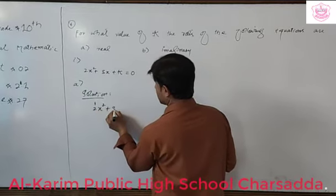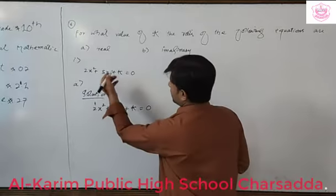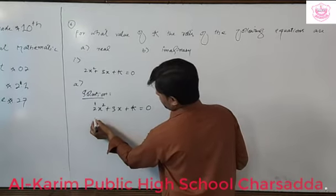The equation is 2x square plus 3x plus k equal to zero. In part a, the roots are real.